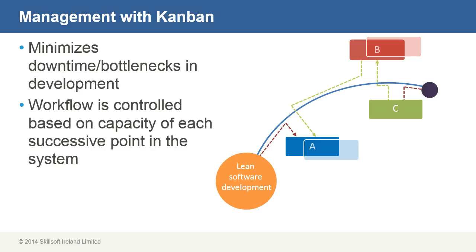A queue is created from which stakeholders can view defined tasks and their delivery times. The benefits of Kanban are that it minimizes downtime and bottlenecks in the development process, and it defines a controlled workflow based on the capacity of successive points in a system.